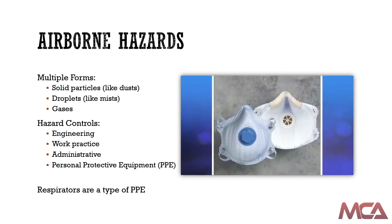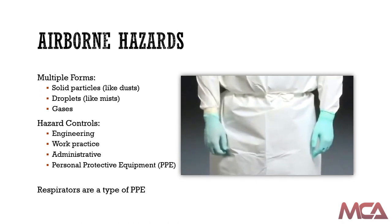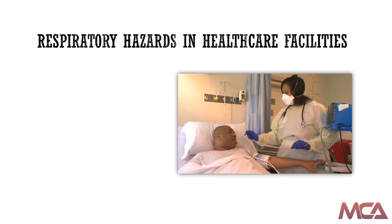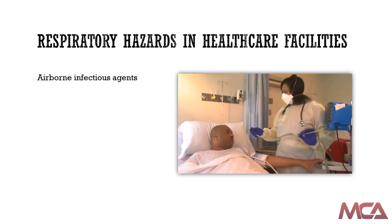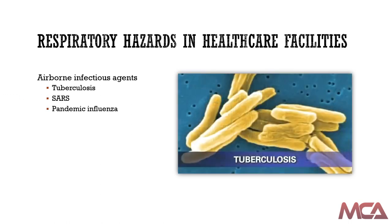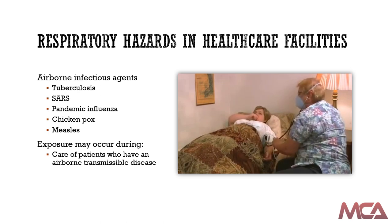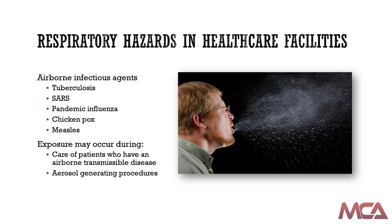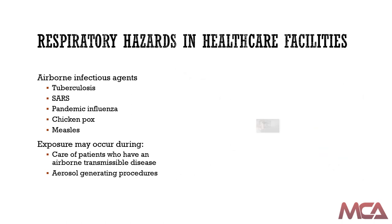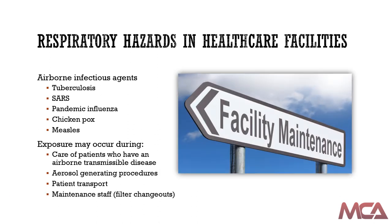Respirators are a type of PPE used to protect workers against breathing airborne hazards, and they are often used in conjunction with other types of PPE such as gloves, goggles, and procedure gowns. The primary type of respiratory hazards in healthcare settings are categorized as airborne infectious agents. Examples where respirators might be required include protection from diseases such as tuberculosis, SARS, pandemic influenza, chickenpox, and measles. Healthcare workers may be exposed during the care of suspected or confirmed airborne transmissible disease patients, during aerosol-generating medical procedures, or when transporting infectious patients in an enclosed vehicle. Direct patient care may not be the only situation where respiratory protection may be needed; maintenance staff may be exposed during tasks such as replacing filters or working in high-risk areas.